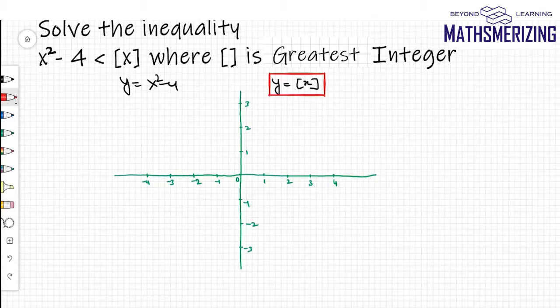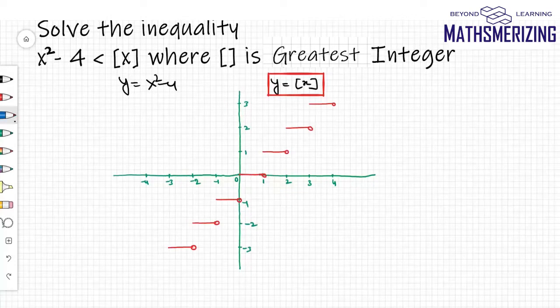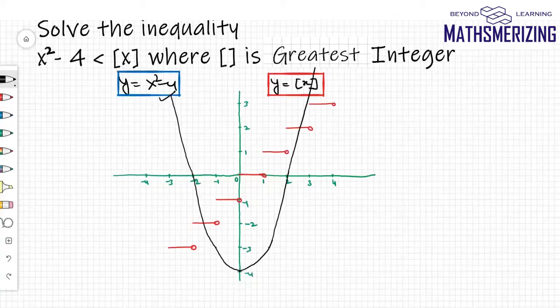First I'll draw the graph of greatest integer function of x, and then I'll draw the graph of y = x² - 4. Now that is the graph of y = x² - 4. There are two points of intersection.